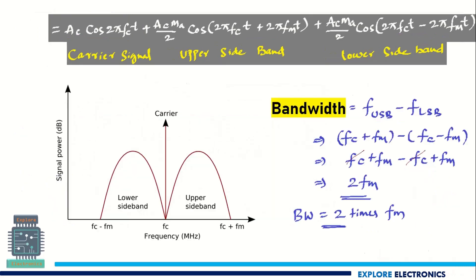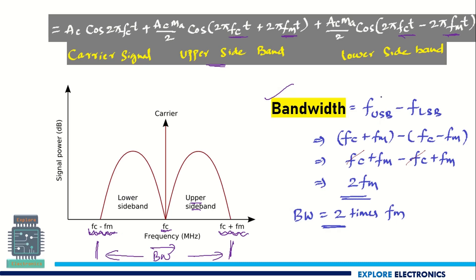With this knowledge, let us move further and derive the expression for bandwidth. If you see the frequency response, the upper sideband has the maximum frequency of FC plus FM, and the lower sideband has the frequency of FC minus FM. In between, the center carrier frequency FC will be there. The bandwidth is the range from the lower to the upper sideband: (FC plus FM) minus (FC minus FM). FC gets cancelled, and FM plus FM gives us 2FM. So the bandwidth of the AM wave will be 2 times the frequency of the modulating signal.